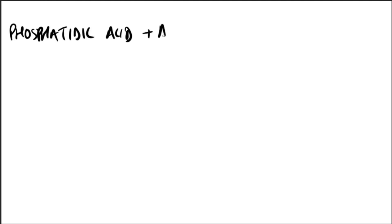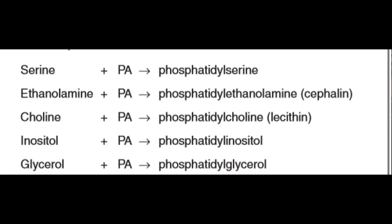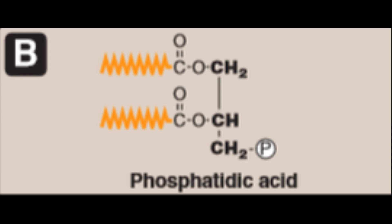Phosphatidic acid is the simplest phosphoglyceride and is the precursor of the other members of this group. Glycerophospholipids are formed from phosphatidic acid and an alcohol. The different types of phospholipids are: serine with phosphatidic acid gives phosphatidylserine; ethanolamine gives cephalin or phosphatidylethanolamine; choline gives lecithin or phosphatidylcholine; and inositol gives phosphatidylinositol. Phosphatidic acid consists of diacylglycerol with a phosphate group.